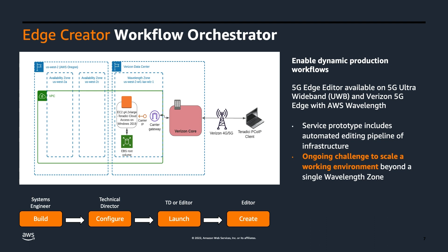It starts with an engineer building a template — we did this in Terraform for our first pass. Then a technical director, who's a manager, anytime they want to start a project, could bring up that template, configure the project, set who's allowed access, define what's in the environment, and press a button. Within the time of AWS APIs — which is very speedy — they had an environment in a short time. Instead of having to pack up a machine, ship it to an editor, handle licensing and wait — which might take a week or two — they could press a button and have an editing environment set up in about 15 minutes.